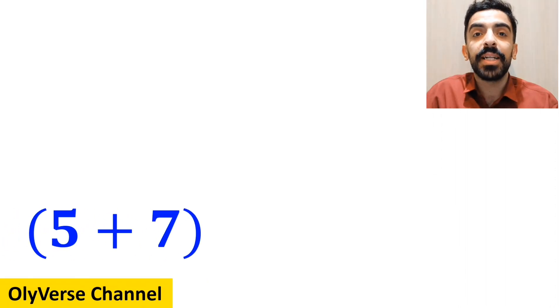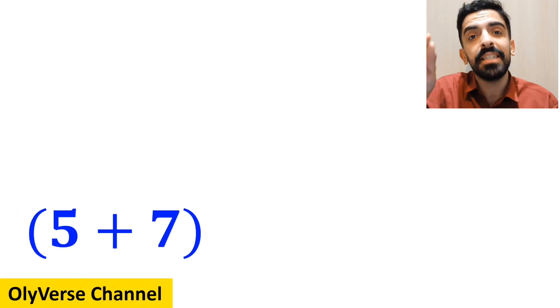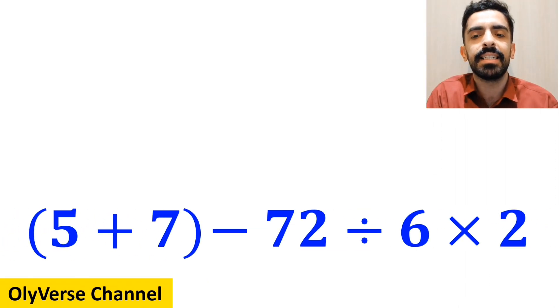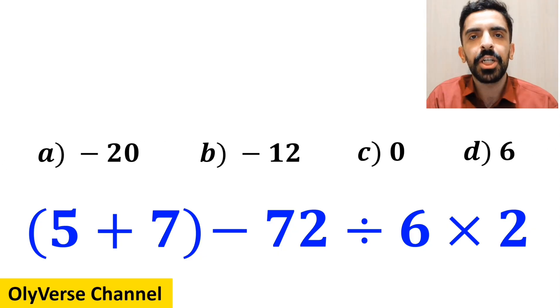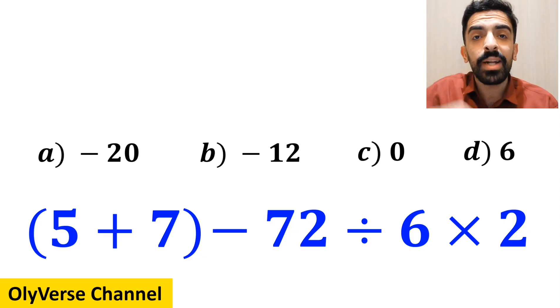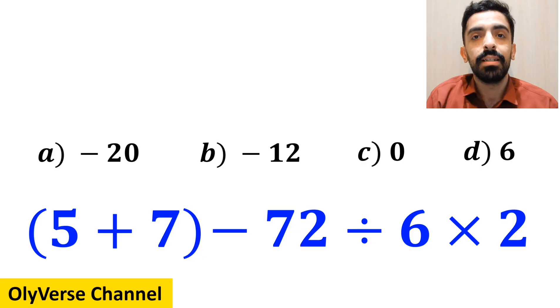What is the value of the expression 5 plus 7 inside the parenthesis, then minus 72 divided by 6, multiplied by 2? Which option do you think is the correct answer to this question?